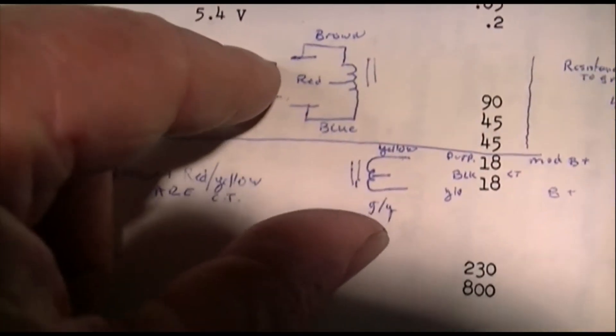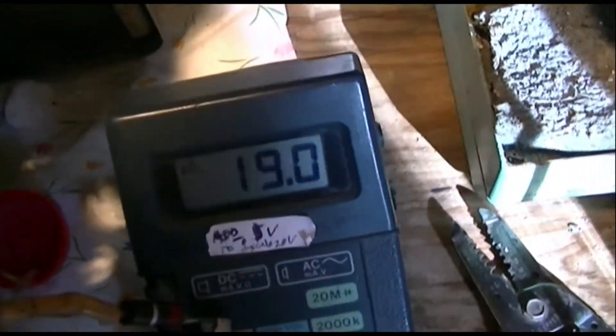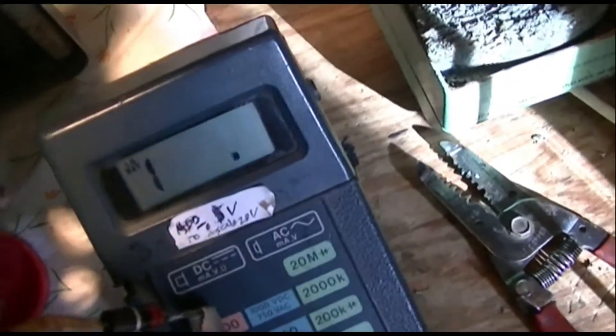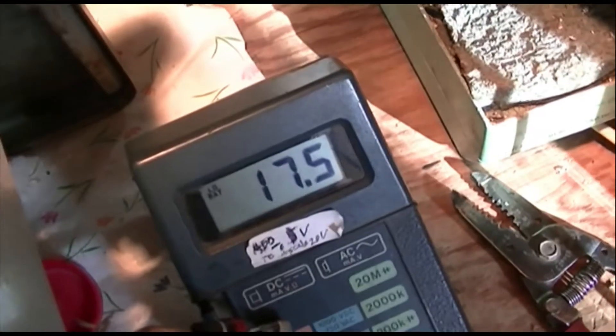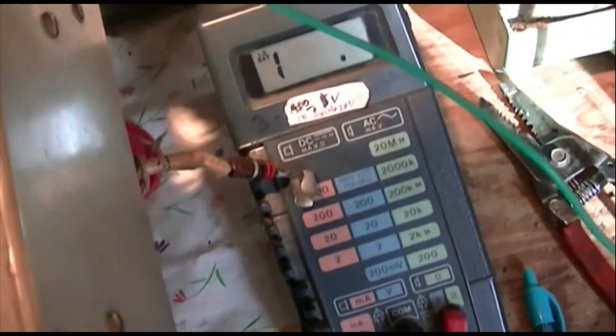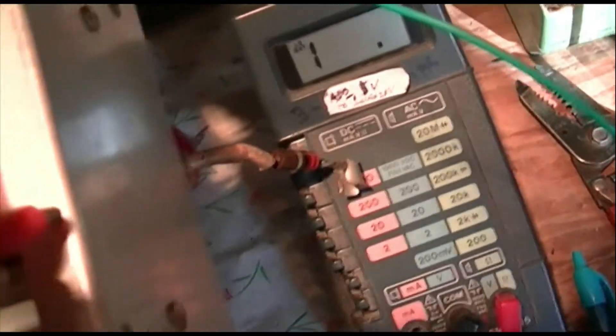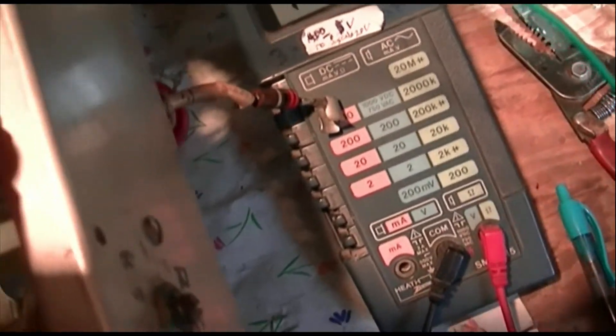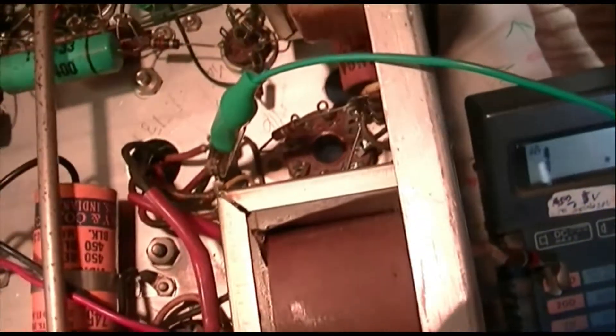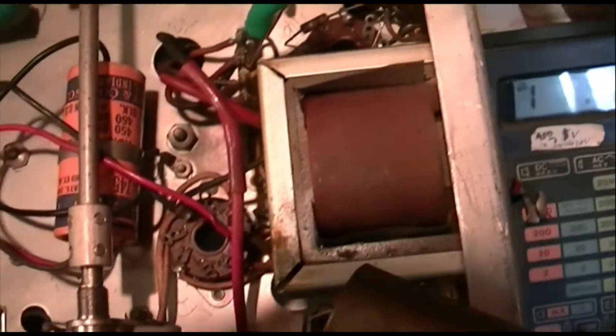There should also be no connection there, so there's no internal shorts. So what we got here is one lead of the ohmmeter on the center tap and we're reading one side of the primary, 19 ohms, that's about right. Book says 18. We'll move this over to the other side, it's reading 17 and a half, close enough. We already checked these things to ground just to make sure that there's no short.